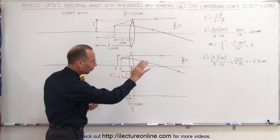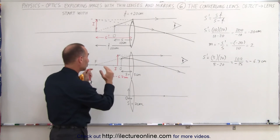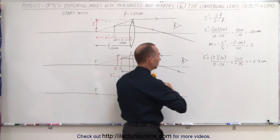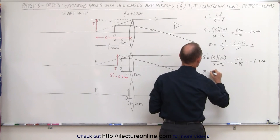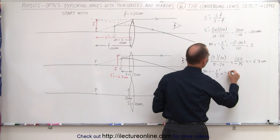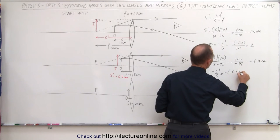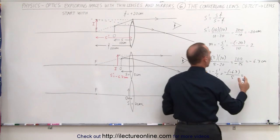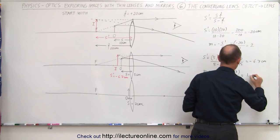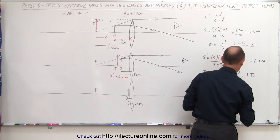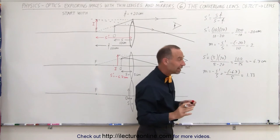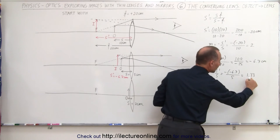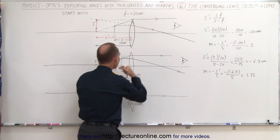That's why it's always better to also do it mathematically to make sure that your graphical drawing is correct. For magnification, magnification is equal to minus S prime over S, which is a minus times a minus 6.7, divided by a positive five, and that would be about 1.33. So that means that the image is about 33% larger than the object.